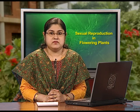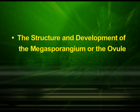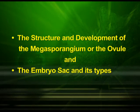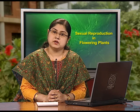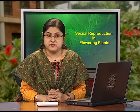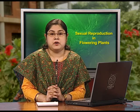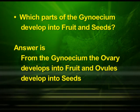In the second part of this chapter, we have already discussed the structure and development of the megasporangium or the ovule and the embryo sac along with its types in detail. We closed the second episode with a point to think about. The point was: which part of the gynoecium develops into fruit and seeds? The answer is: from the gynoecium, the ovary develops into fruit and ovules develop into seeds.